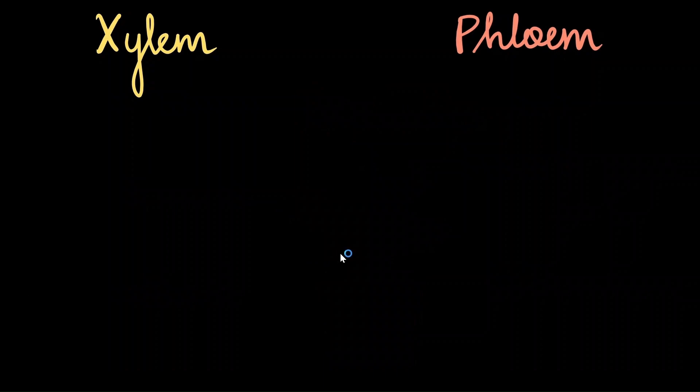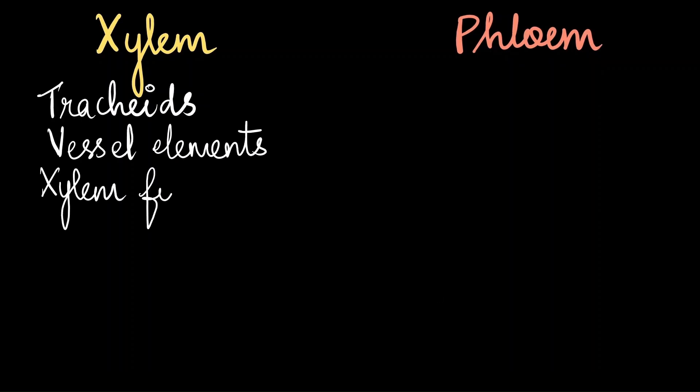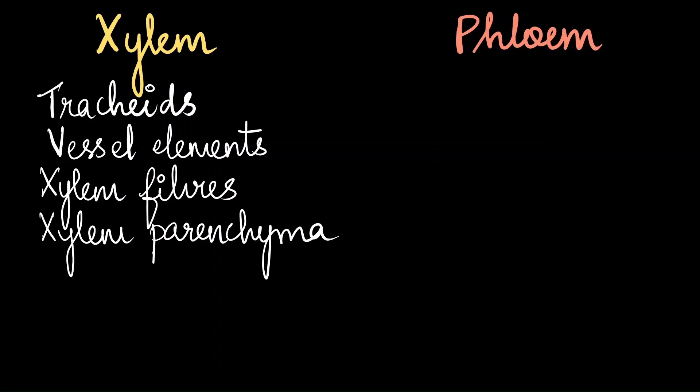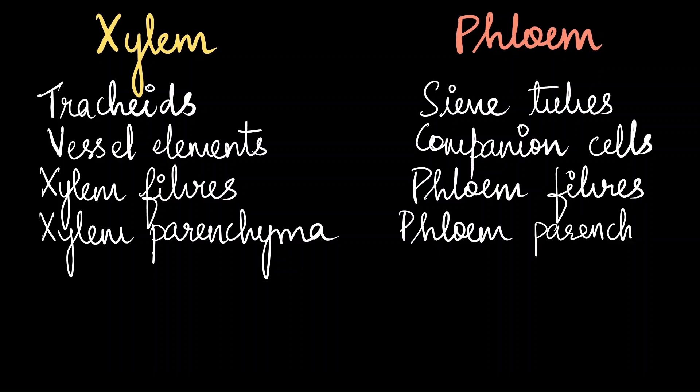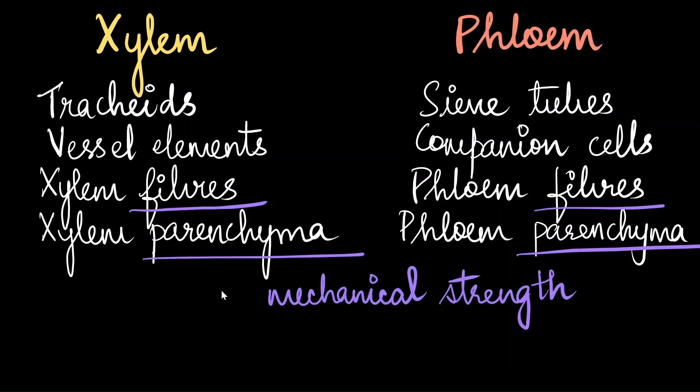Xylem and phloem also has specific components within them because these are complex tissues meaning there is more than one type of cell present within the tissue. We have tracheids, vessel elements, xylem fibers and xylem parenchyma in case of xylem and phloem has sieve tubes, companion cells, phloem fibers and phloem parenchyma. Do you see the words fiber and parenchyma? If you recall, fibers and parenchyma are part of the ground tissue systems in plants. Therefore, we can conclude that in addition to translocation of substances, xylem and phloem also provide mechanical strength to the plant.